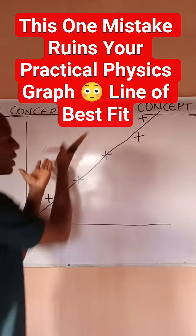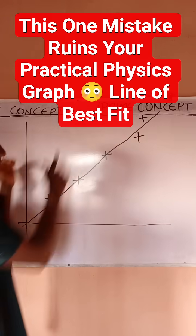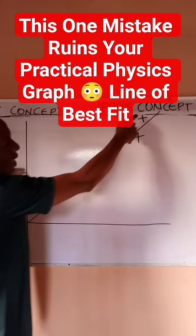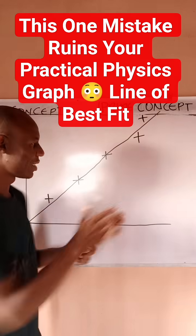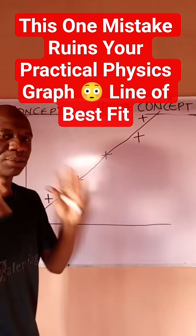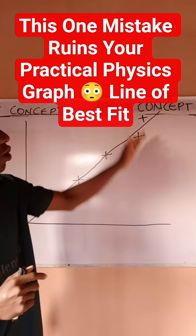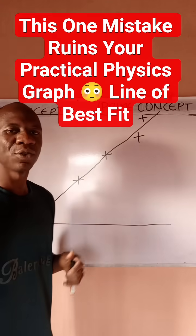notice that two of the points are above the line of best fit—this and this—then one of the points is below, which is this. So it means that you have distributed the unaccommodated points evenly. If